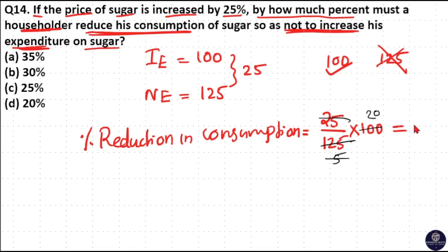Then 20 percent is the percentage reduction in consumption. So this householder needs to reduce 20 percent consumption on sugar. Option D is your answer.